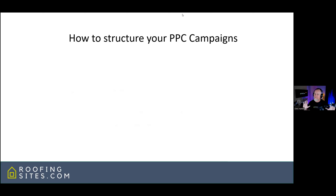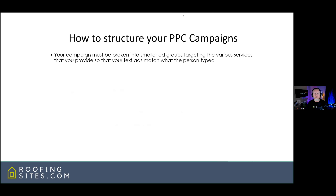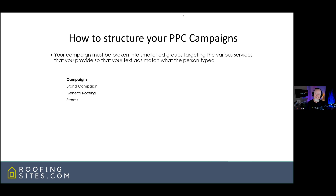If you've never set up pay-per-click campaigns before, there are essentially three main areas to focus on, and you want to structure them by breaking campaigns into smaller ad groups. The way we typically like to see these set up: one, you have a brand campaign — a whole campaign set aside just for your brand so that when someone searches your company's name, your ad shows up and your competition doesn't take that spot. Two, you have a general roofing terms campaign for terms like roofer and roofing. Three, a storm campaign — especially important in Texas where storms come through at least twice a year. You want to be able to turn storm campaigns on and off quickly when there's hail in a specific area.